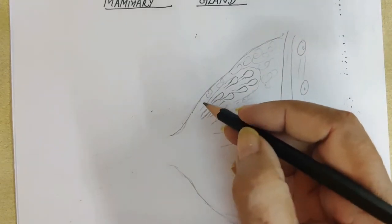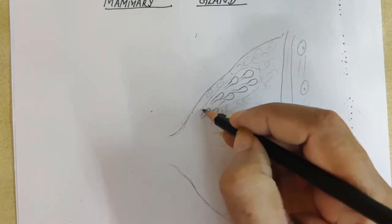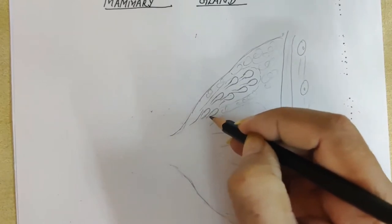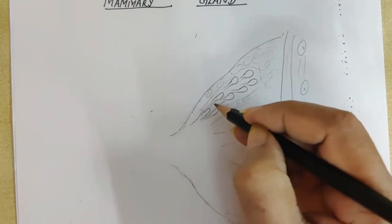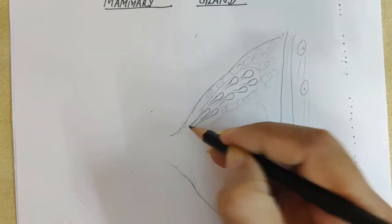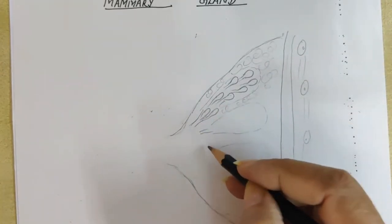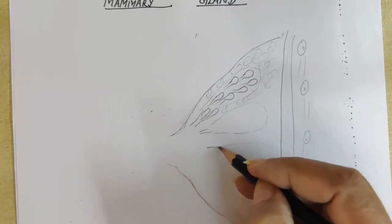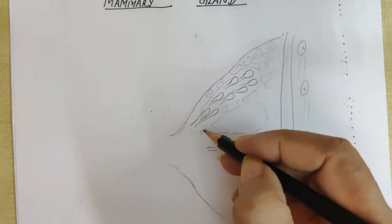into a mammary duct. From here you can show the mammary duct. All of them are joining and this mammary duct is coming. From each of the lobe, the mammary ducts are coming.